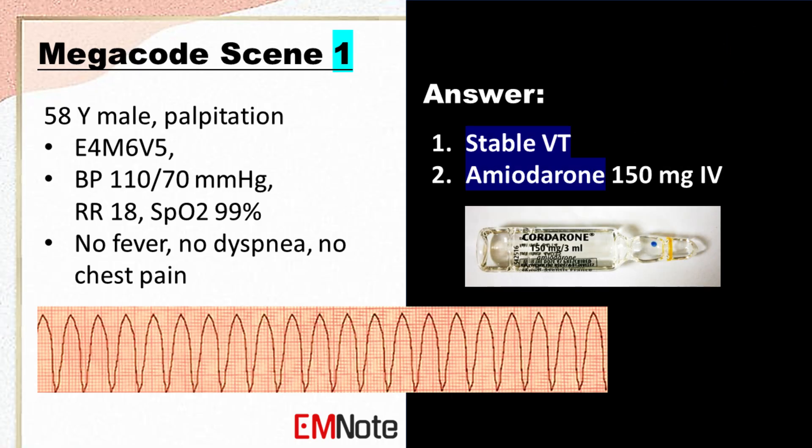The patient has stable ventricular tachycardia (VT). Amiodarone 150 milligrams intravenously is being administered to treat the VT. The usual dose of amiodarone for VT is 150 milligrams intravenously over 10 minutes.